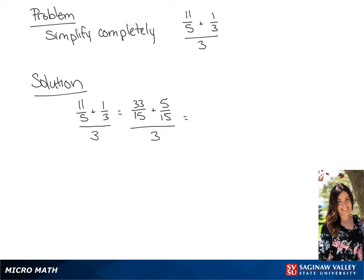We can simplify the numerator to get 38 fifteenths, again over 3. So this will be 38 over 15 times 1 third. Multiplying gives us 38 over 45.